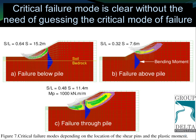One of the main advantages of using the strength reduction method is the clarity by which you can see the critical mode of failure. Another advantage is that it eliminates the guessing typically involved in conventional slope stability, where you have to make a hypothesis about what the critical mode of failure likely is.